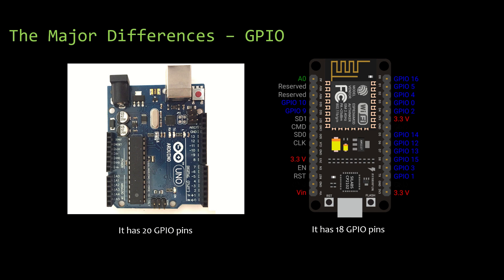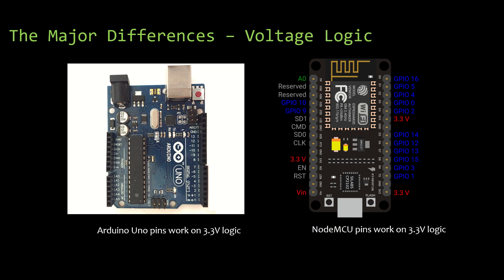The first one: GPIO pins. We have got 20 GPIO pins in Arduino UNO whereas we have got 18 GPIO pins in NodeMCU — 20 versus 18.